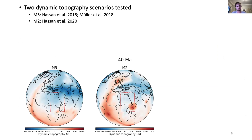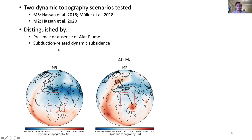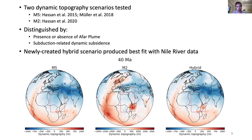Regarding the dynamic topography scenarios we tested, there were two main dynamic topography models shown here at 40 million years ago. They are mainly distinguished by the presence or absence of a signal related to the Afar mantle plume under East Africa, as well as the extent and magnitude of dynamic subsidence around North Africa related to subduction associated with the Tethys ocean. I also created a hybrid dynamic topography scenario combining elements from both models, and it was this hybrid scenario which produced the best fit with the Nile river data and was selected as our preferred model for the region.